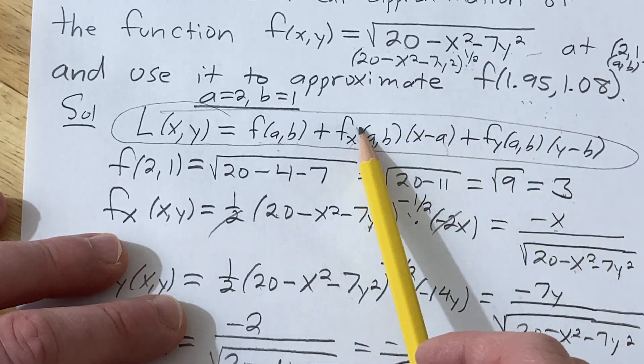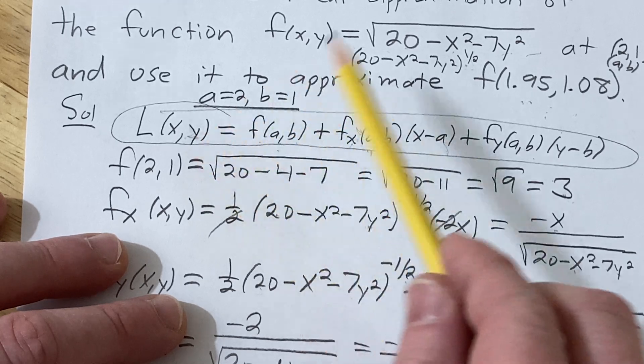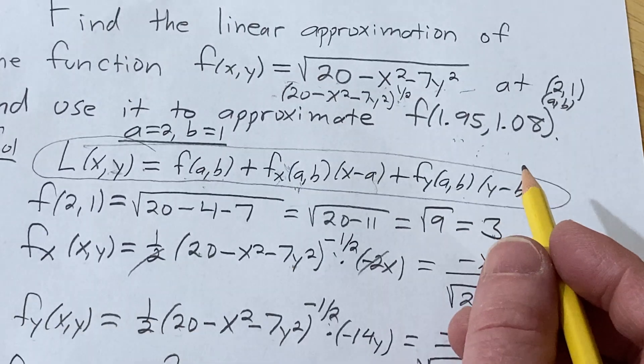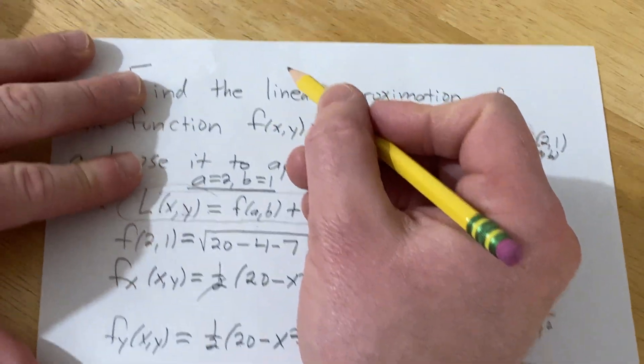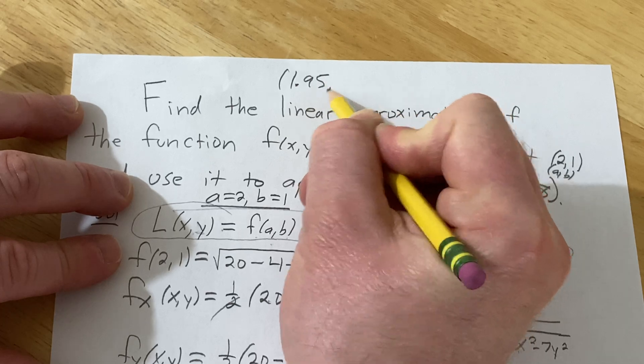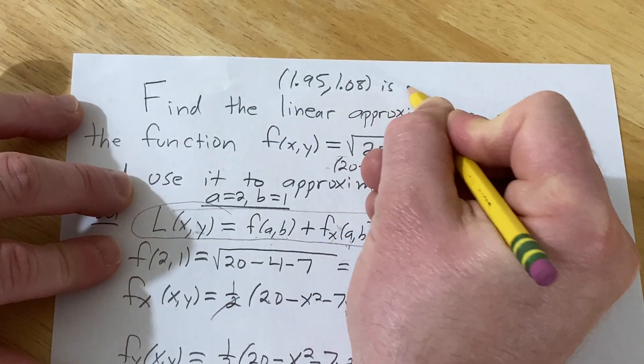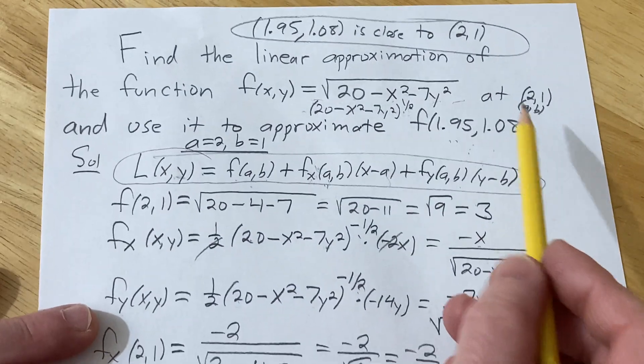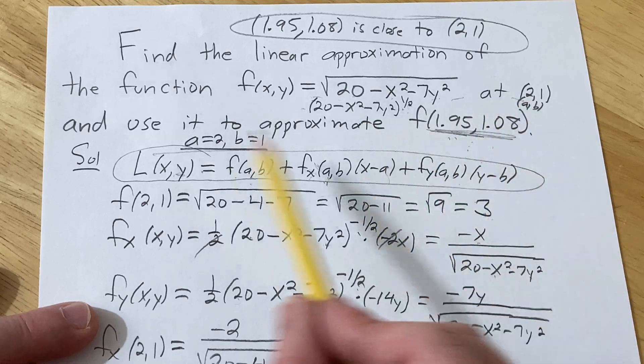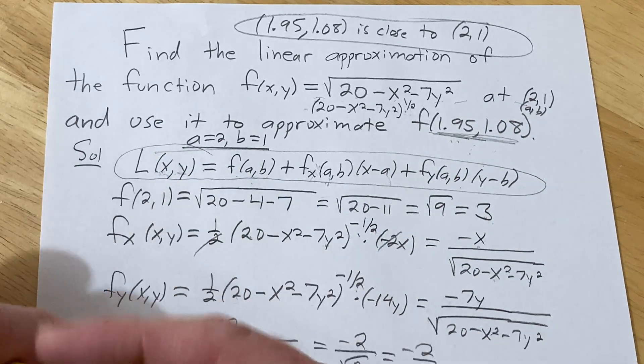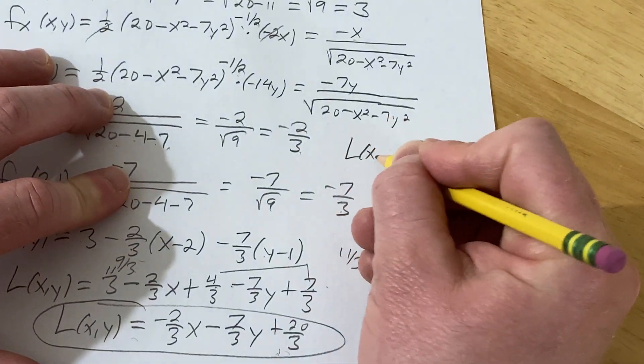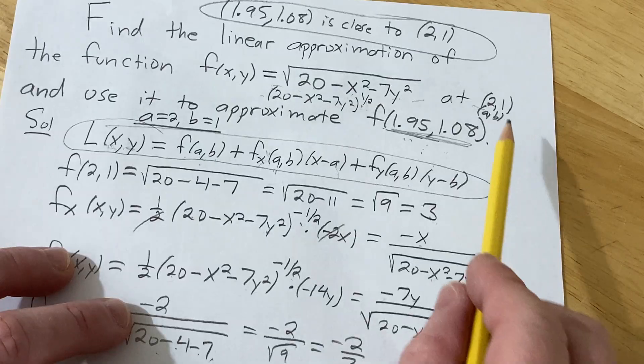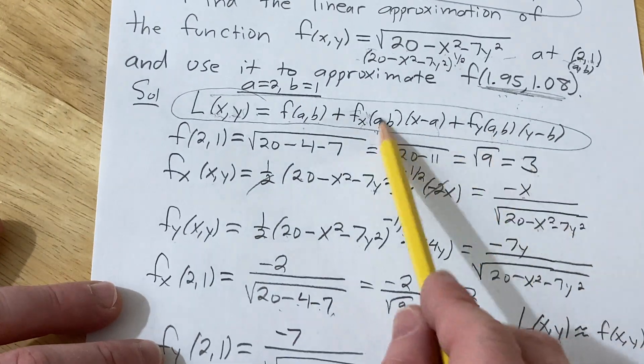And you find your partials, you plug in your numbers, and then this approximates f whenever your ordered pair is close to (2,1). And notice that, notice that our ordered pair, so notice that (1.95, 1.08) is close to (2,1). That's key, right? That's key. Because this only works when this ordered pair is close to this one. So this is approximately equal. So L(x,y) is approximately equal to f(x,y) whenever (x,y) is close to (2,1). And that's because we use (2,1), right? We found the linearization at (2,1).